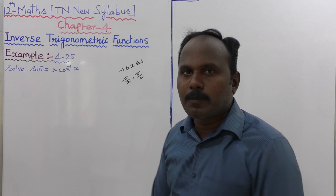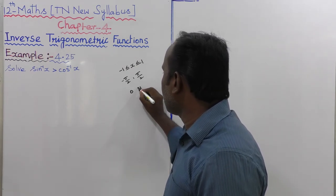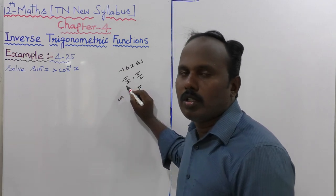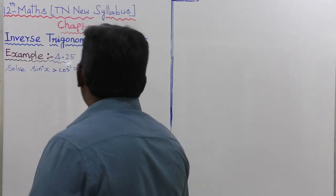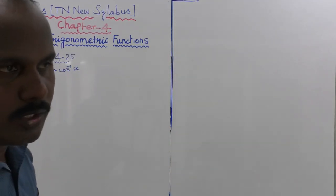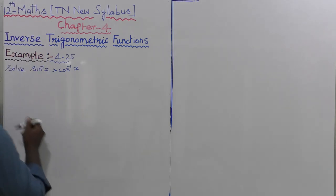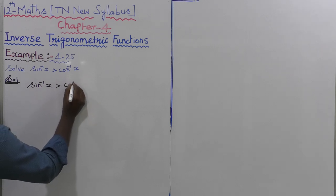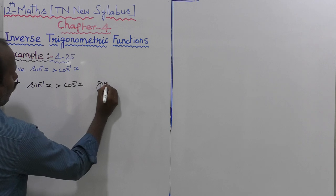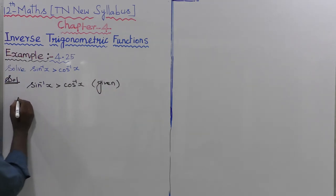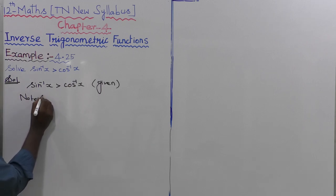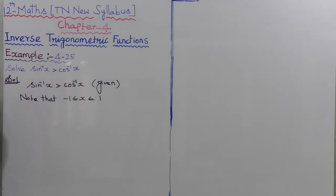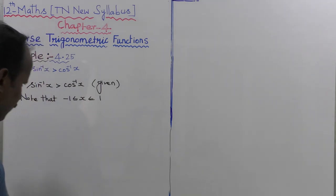For cos⁻¹, the range is [0, π]: cos(π) = -1 and cos(0) = 1. The limit of the value of sin⁻¹(x) is from -1 to +1. So, for the given inequality sin⁻¹(x) > cos⁻¹(x), our condition is that x satisfies -1 ≤ x ≤ 1.